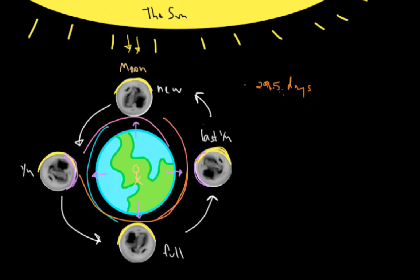And this gets a special name. This is called the synodic month. So we'll just write that out. Synodic month. And this is, for a lot of cultures, the way they calculate the time in ancient times, just based on the cycles of the moon.